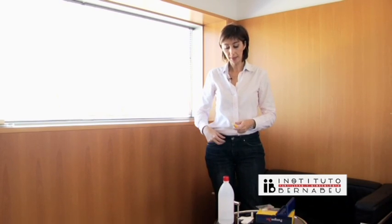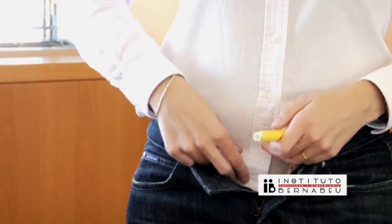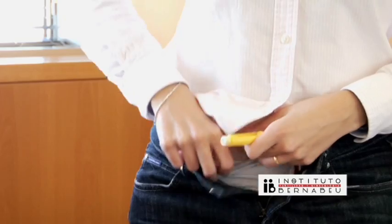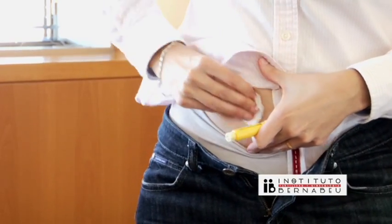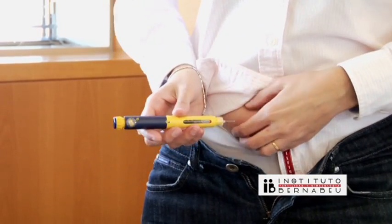First uncover your lower abdomen, which is where you will make your injection. Rub the area around your belly button with an alcohol-soaked swab. Pinch the clean skin and inject the medication.